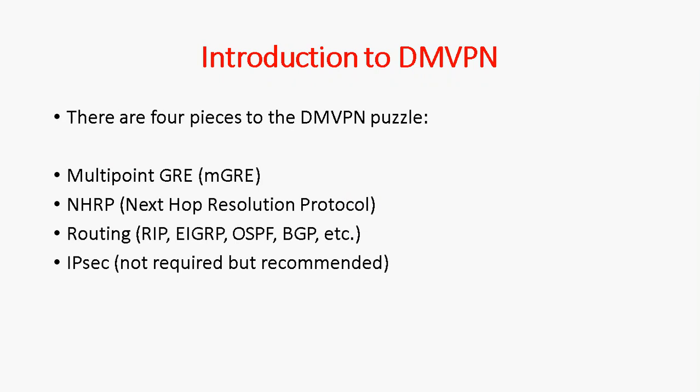The four pieces are: multi-point GRE, Next-Hop Resolution Protocol, routing, and IPSec. For routing, we can use protocols like EIGRP, OSPF, and BGP. When configuring DMVPN, we have to use some routing protocol on top of it, which we'll see in a separate video session. IPSec is not required but it is recommended.